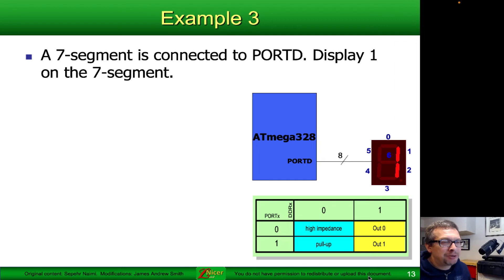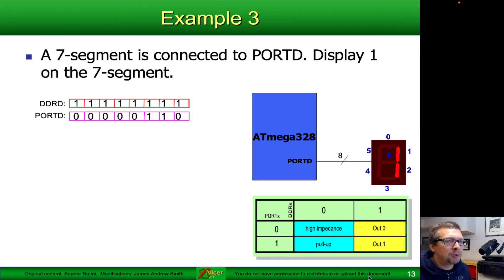They're connected up using eight wires. That's what that one line with a slash through it means - eight wires to port D. Each one of these wires is connected to one of the individual lights or LEDs inside of this seven or eight segment display. We want to make the number one show up on it. That means that segments one and two need to be lit up.